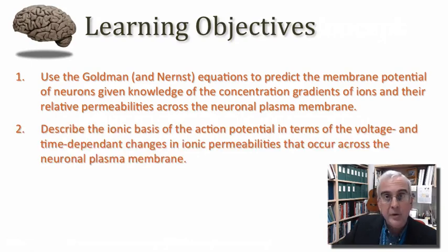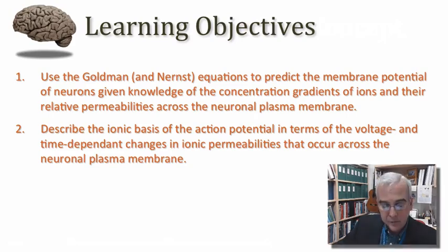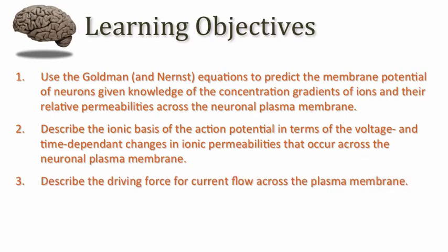I want you to be able to describe the ionic basis of the action potential in terms of both the voltage and time dependent changes in ionic permeabilities that occur across the neuronal plasma membrane. I also want you to be able to describe the driving force for current flow across the plasma membrane. Driving force will be an important concept that will help you understand the movement of ions through ion channels that give rise to the action potential, but also through other kinds of ion channels that are gated not by voltage but by neurotransmitters.